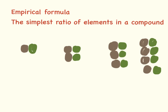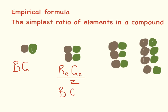Looking at some of the examples drawn here: in the first one we have one brown dot and one green dot. In the second, brown 2, green 2 — but because we can divide both of these numbers by 2, the simplest ratio is brown, green. Here we have brown 3, green 3 — we can divide both by 3, so the simplest ratio again is brown, green.